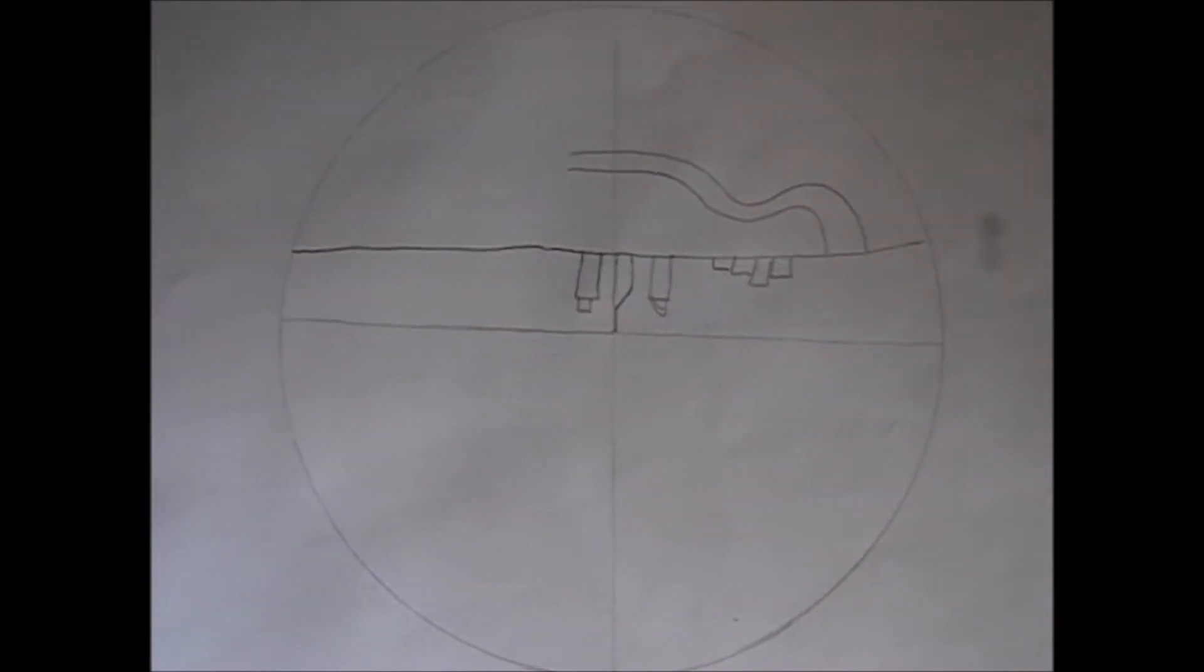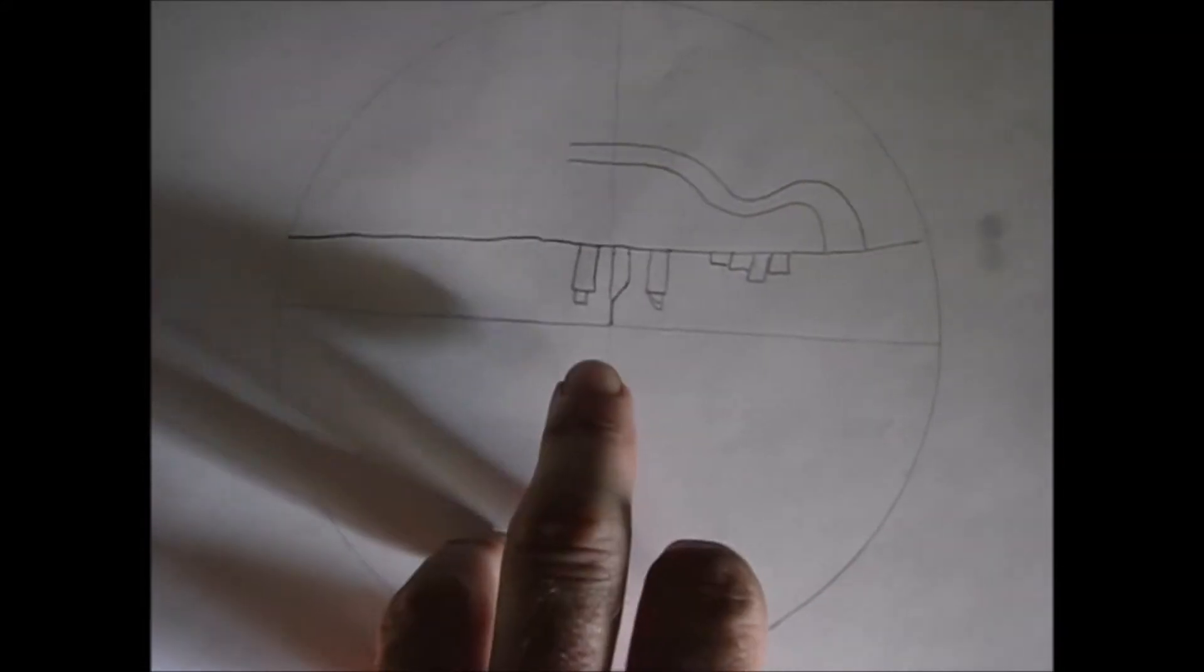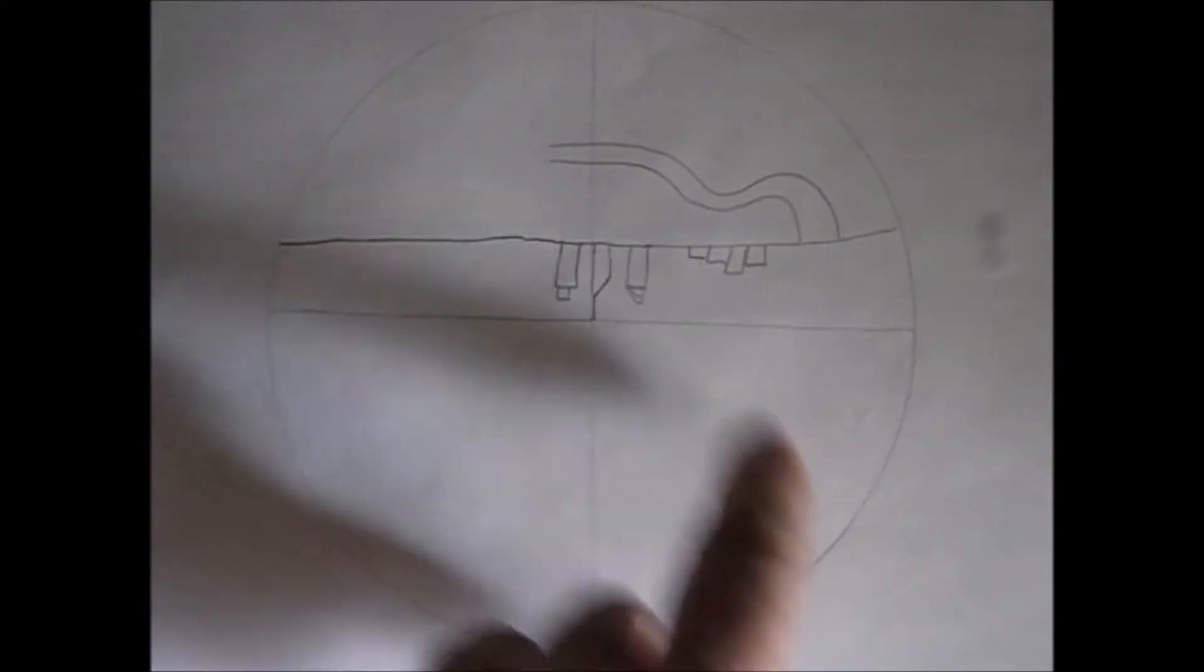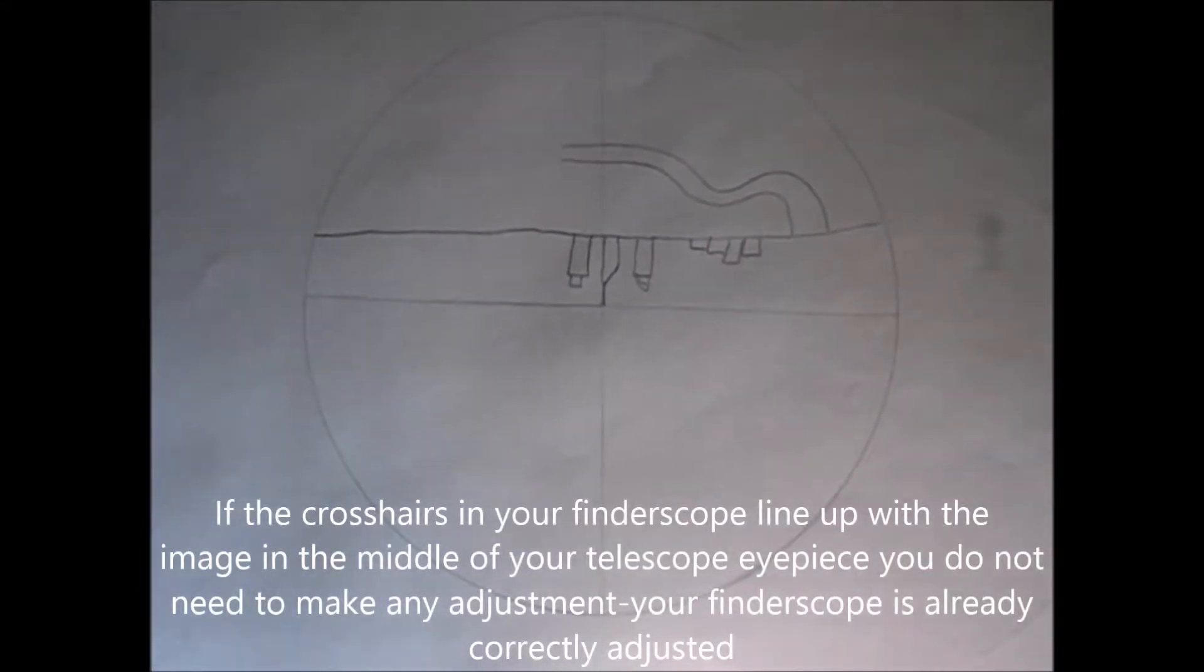So then when you come to look through the finder scope, this is what it will look like. Once again, now if you find that the reference point is exactly in the center of the crosshairs on the finder scope, then you can stop now. You don't need to realign your finder scope, everything's good.